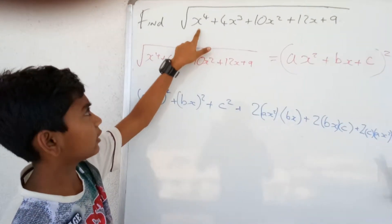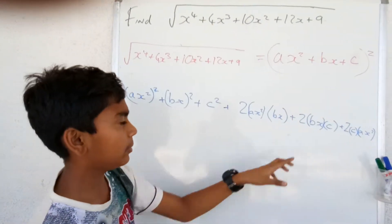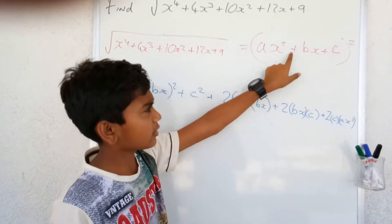First thing we must notice that the degree of this polynomial is 4. So the square root would be in the form of ax square plus bx plus c.